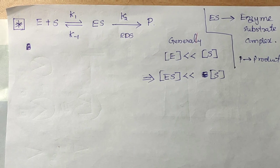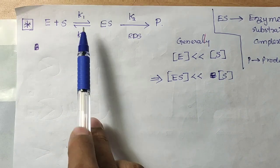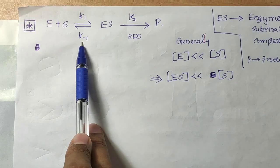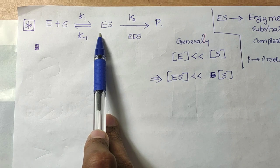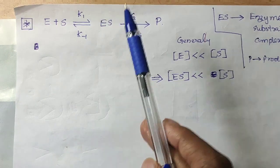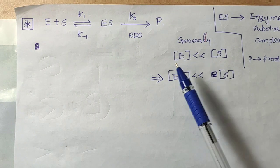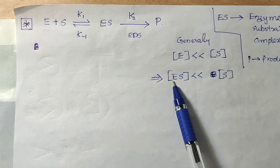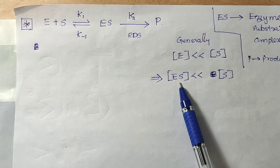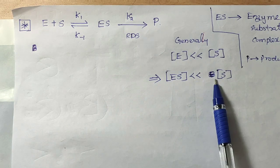Let us start the derivation. Here E is enzyme, S is substrate, K1 is the rate constant of the forward reaction, K-inverse is the rate constant of the backward reaction, ES is the enzyme-substrate complex, and K2 is the rate constant for the second step; P is product. Generally, the concentration of enzyme is very low, which implies that the enzyme-substrate concentration is also very low compared to that of the substrate.